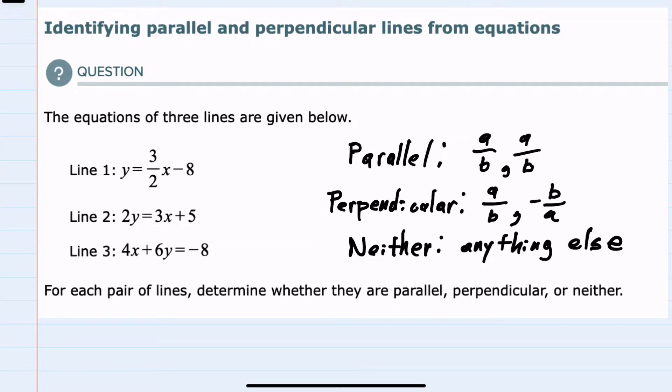So identifying slopes here for line one, it is in slope intercept form. So we can see the slope, which is the M in Y equals MX plus B form, is three halves. So line one has a slope M of three halves.